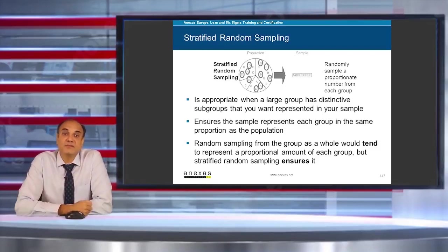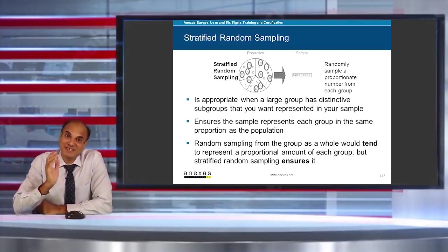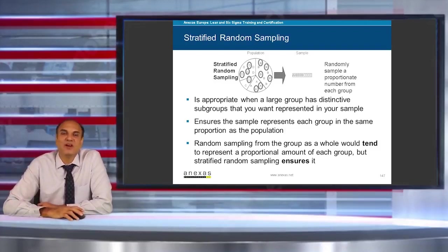Stratified random sampling is appropriate when a large group has distinctive subgroups that you want represented in your sample. It also ensures the sample represents each group in the same proportion as the population. In short, stratified random sampling means randomly sample a proportionate number from each group.